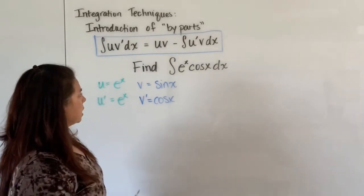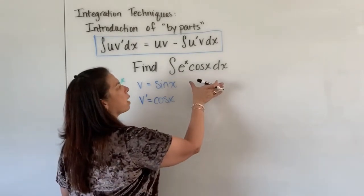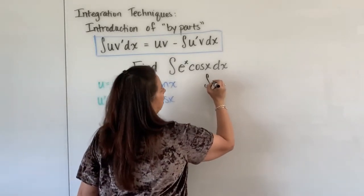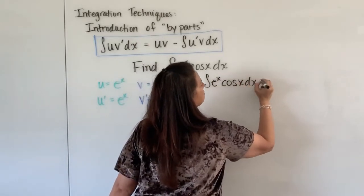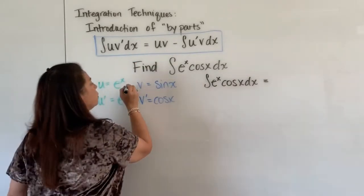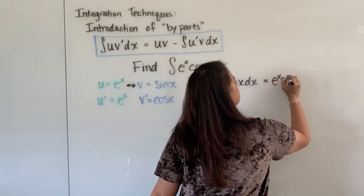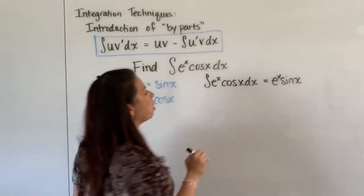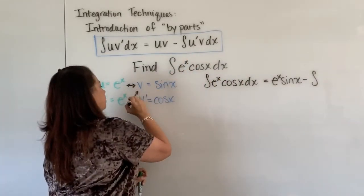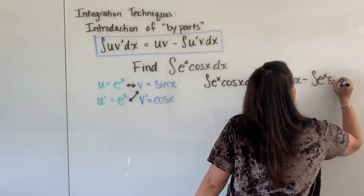So if we continue on with our problem here, I'm going to handle this one a little bit differently. I actually want to rewrite this expression again. I'm going to call this the integral e to the x cosine x dx. And of course, that will be equal to continuing on with our structure, our u times our v. So that's e to the x times sine x. But then we need to subtract off the integral of u prime v. So that's e to the x times our sine x dx.